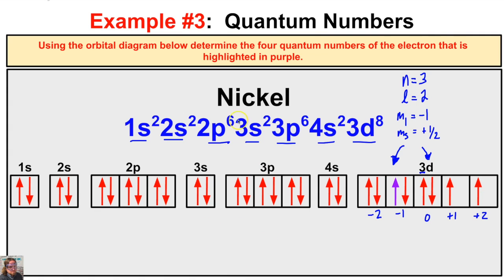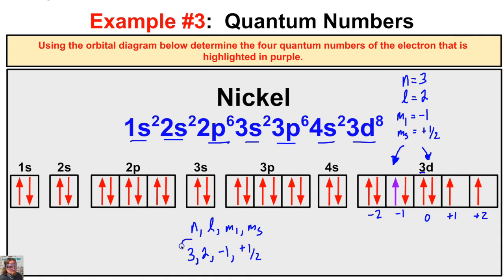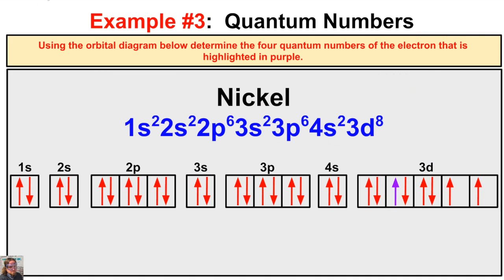Since the spin is upward, m sub s equals positive one half. Remember: n comes first, followed by l, followed by m sub l, followed by m sub s. So the quantum numbers for this electron in the nickel atom are three, two, negative one, positive one half.